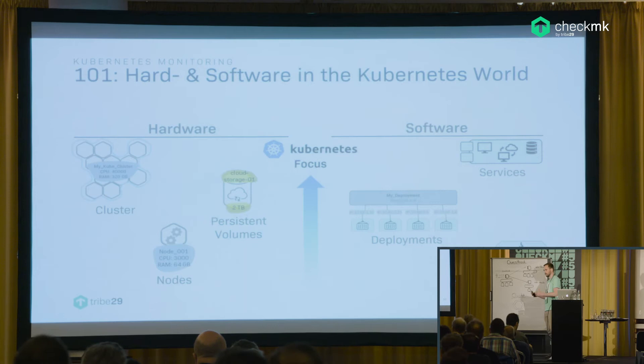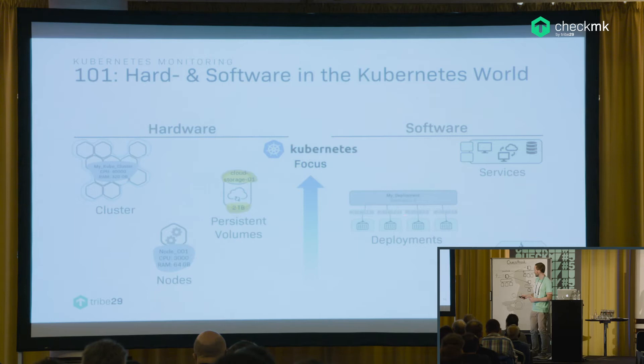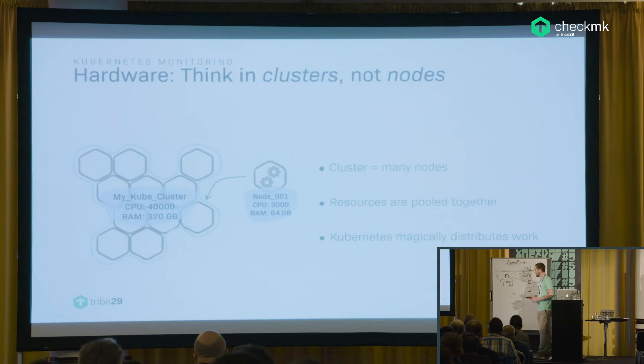Now let's look at Kubernetes in a little more detail. Again, you can see a very strong line between hardware and software. Overall, you just have to take care of more objects. You have clusters, clusters made up of different nodes, and then we also have persistent volumes. We also have pods as the smallest unit on the software side, and they are collected in deployments and made available via services.